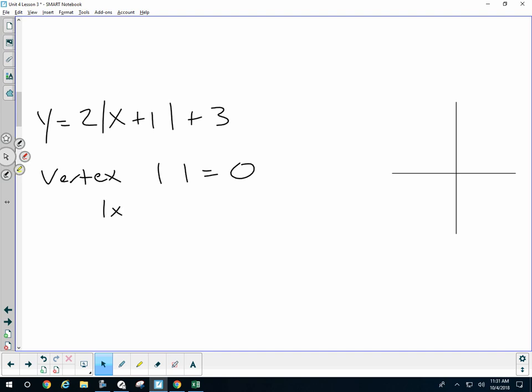And again, when I have an absolute value equal to 0, I don't really care about the absolute value. It's just the stuff inside equal to 0, and I get x equals negative 1. So I know my vertex is at negative 1, but don't assume the vertex is at negative 1, 0.